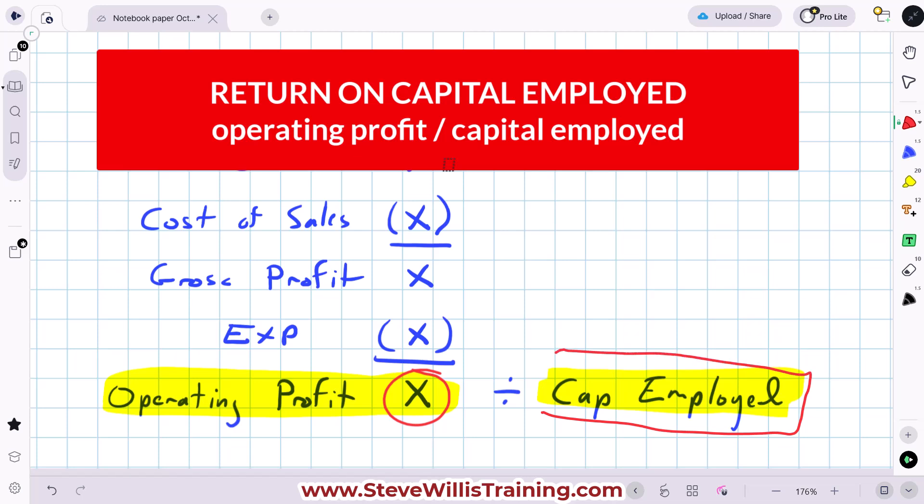So operating profit divided by capital employed is return on capital employed, a measure of efficiency. How efficient is our overall investment at delivering operating profit expressed as a percentage?